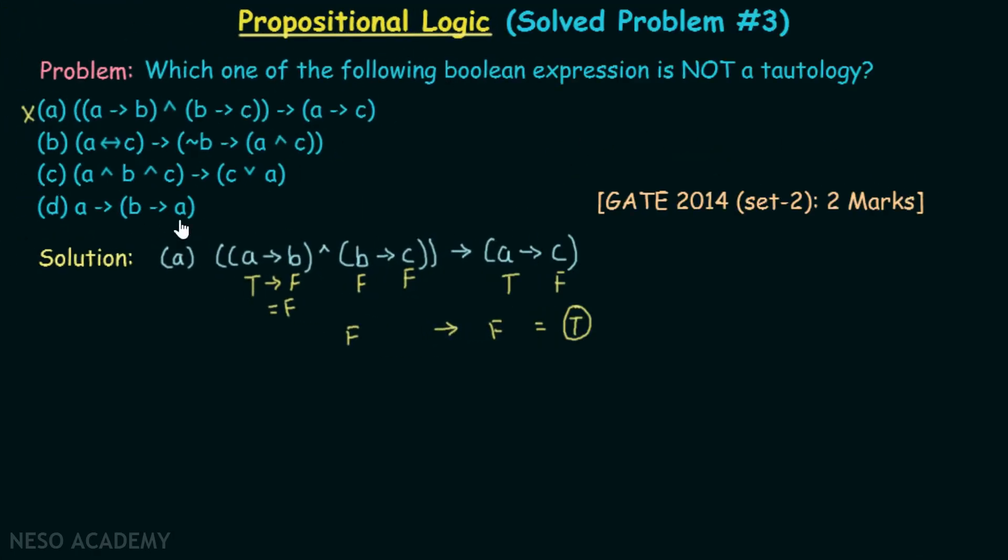Let's consider the second statement. A biconditional C implies not B implies (A and C). Let's try to make this expression false.